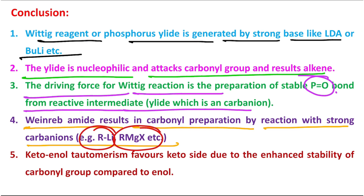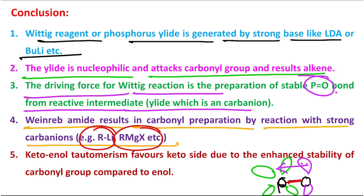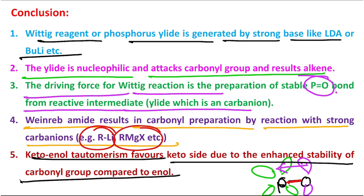This phosphorus–oxygen bond is significantly stable due to d-pi/p-pi backbonding. Phosphorus has a vacant d orbital and oxygen has a filled p orbital, so oxygen can delocalize some of its electron density into the vacant d orbital of phosphorus. In this way the P–O bond has multiple bond character, and the greater the multiple bond character, the greater the strength of that bond — that is why the phosphorus–oxygen bond is very stable. Finally, keto-enol tautomerism favors the keto side due to the enhanced stability of the carbonyl group compared to the enol; C=O is more stable than the corresponding enol, so equilibrium almost completely goes to the keto side.